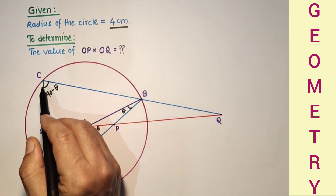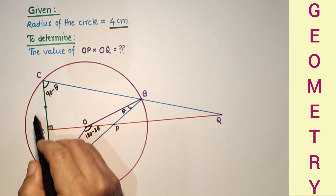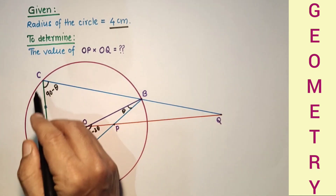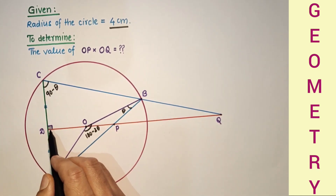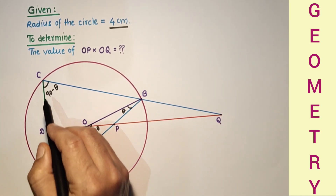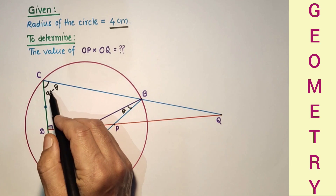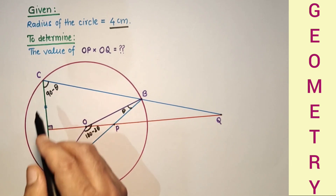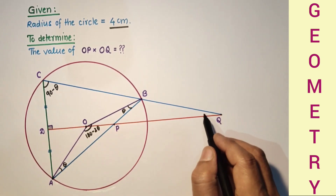Now considering triangle CDQ: one angle is 90 degrees and another is 90 minus theta, so therefore the remaining angle will be theta.